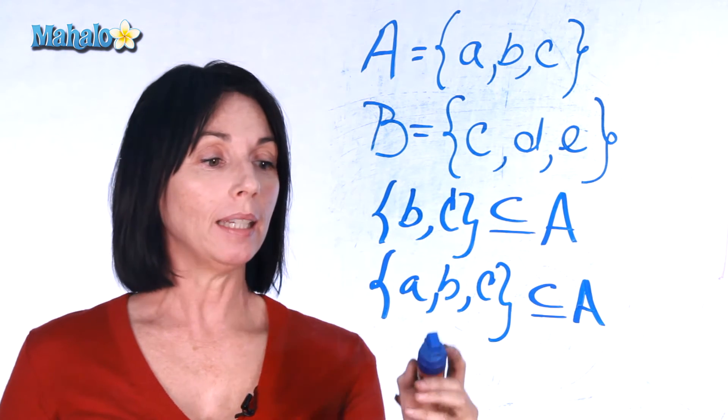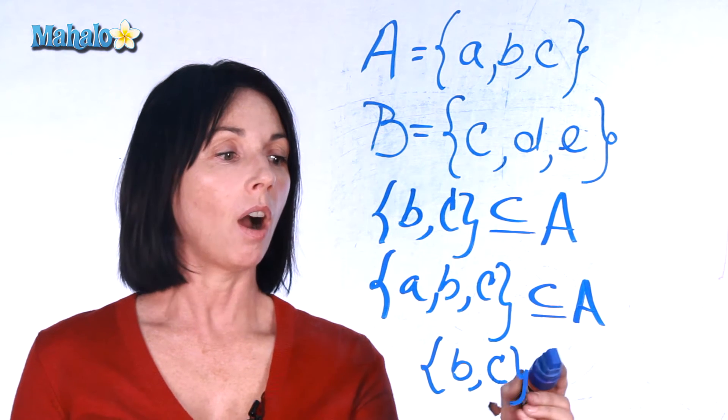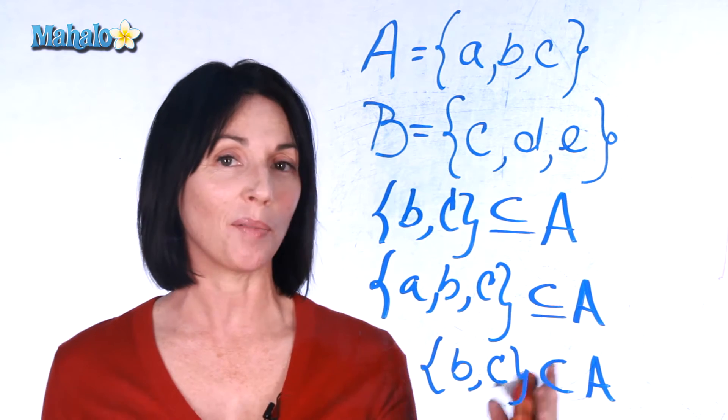So b and c are a proper subset of set A. Without the line under it, that means proper subset.